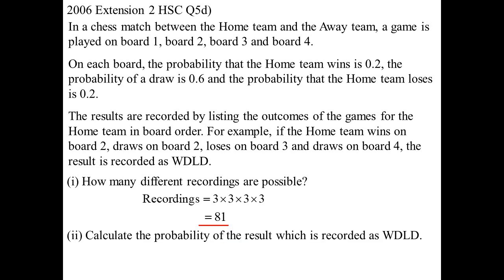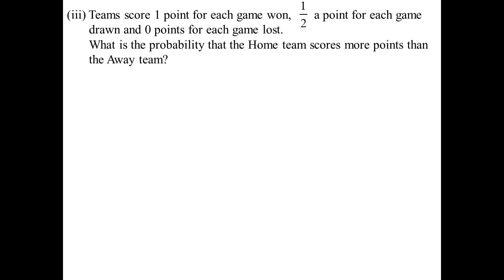Well, all right then, calculate that result they talked about, the win, draw, loss, draw. Well, they told me probability of win was 0.2, probability of draw was 0.6, loss is 0.2, and draw is 0.6. So there's the probability, 0.144. Now, how do they get their points? Teams score one point for a game won, half a point for a draw, and no points for a loss.